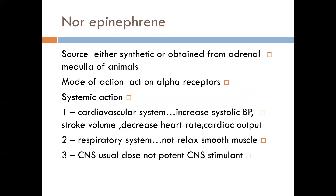The second type is norepinephrine (noradrenaline), sourced either synthetically or obtained from the adrenal medulla of animals. The mode of action differs: noradrenaline acts only on alpha receptors, whereas adrenaline acts on both alpha and beta receptors. Systemic actions also differ: on the cardiovascular system it increases systolic blood pressure, also increases diastolic blood pressure, increases stroke volume, but decreases heart rate and decreases cardiac output. On the respiratory system, there is no effect on smooth muscles of the bronchi, unlike adrenaline. On the central nervous system, there is no effect.